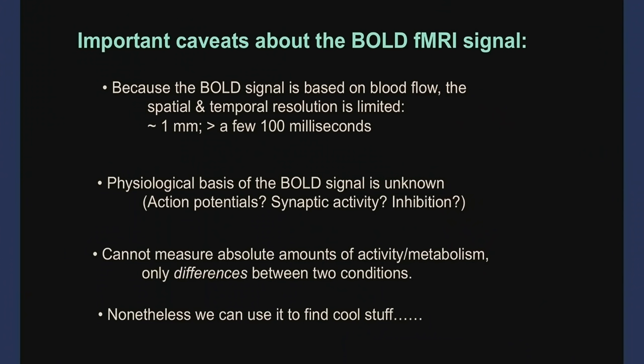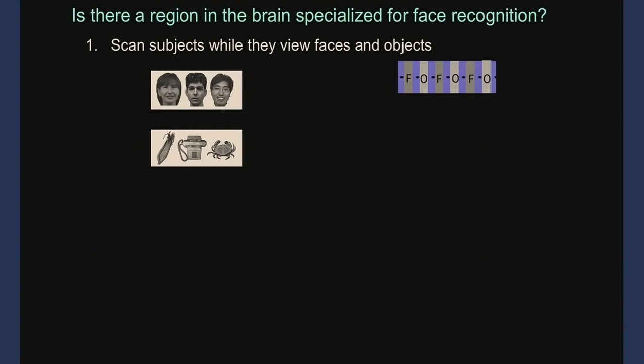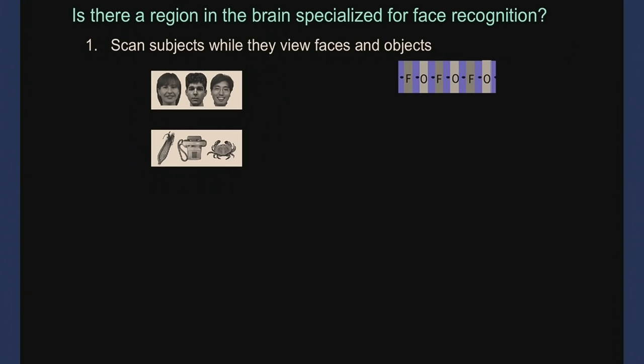Nonetheless we can discover cool things. To get back to face recognition: you might want to know if face recognition is a different problem in the brain from object recognition. If so, you might want to write different code to understand it. Here's an experiment I did about 20 years ago — the simplest possible thing.